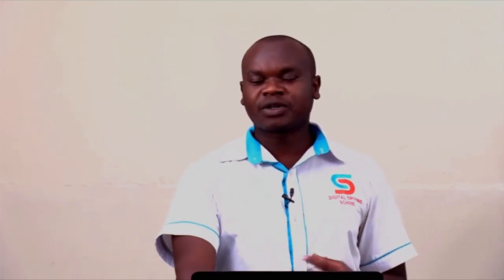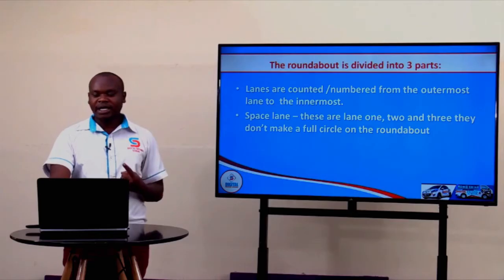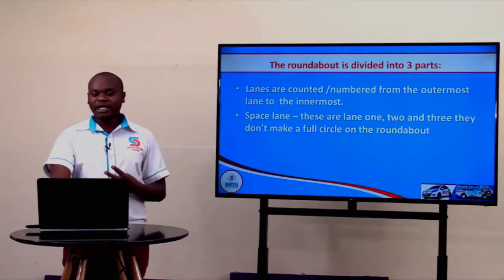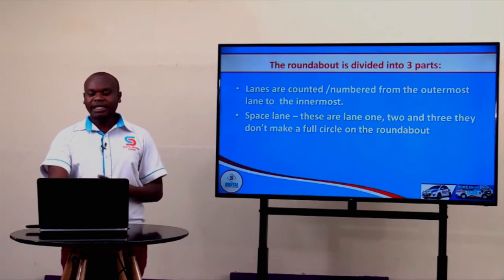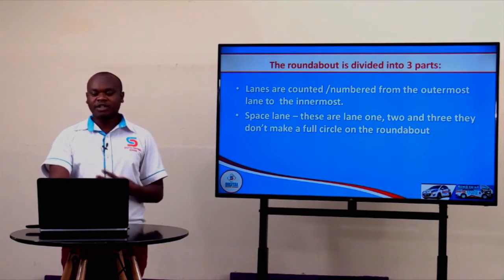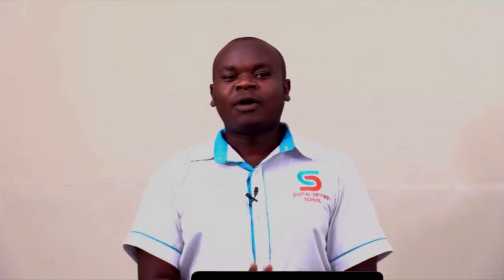So three things to remember: the roundabout has three parts. One, the traffic island. Two, the innermost lane — in our model town board that is lane number four. And three, the space lanes or the spaces — those are lanes number one, two, and three.